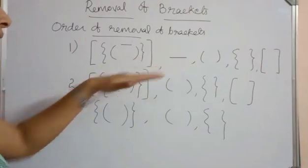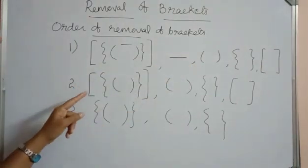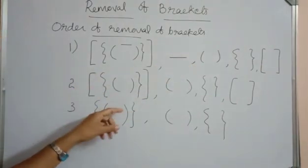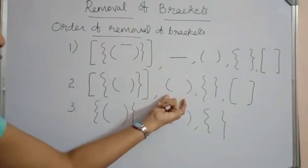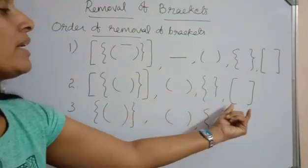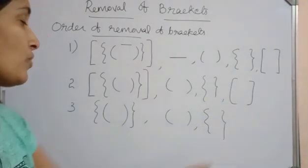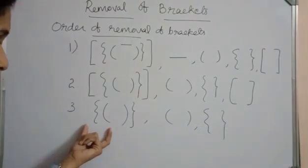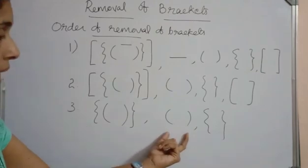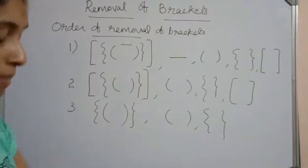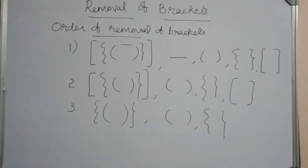When three brackets are used in an expression, first remove the small bracket, then the curly bracket, and finally the square bracket. When two brackets appear, remove the small bracket first, then the curly bracket. If there is a plus sign before a bracket, the bracket is removed without changing the signs of the terms inside. If there is a minus sign before a bracket, the bracket is removed by changing the sign of each term inside.